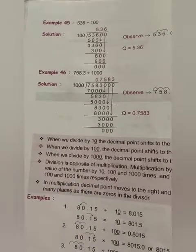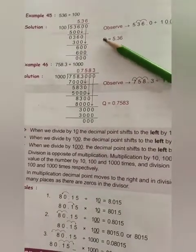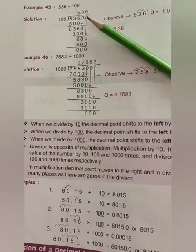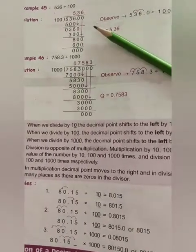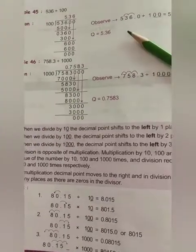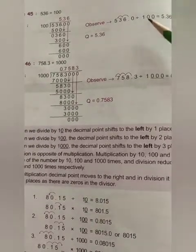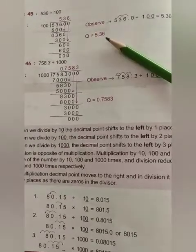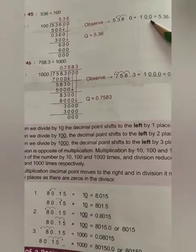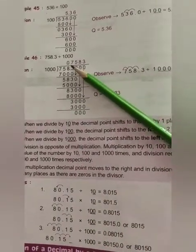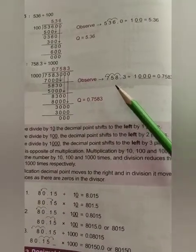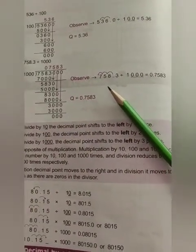Then example 45, here you see, 536 divided by 100. If we divide this number with 100, then you see, two places move left side. Because children, here two zeros are there, okay. 5.36. Here you see, three zeros are there. So it moves left side by three places.